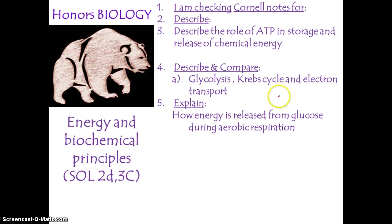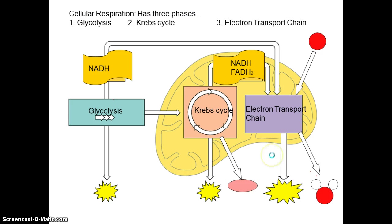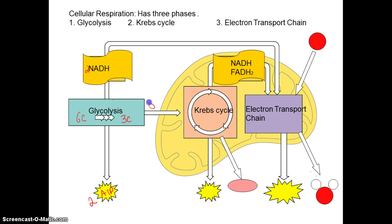Aerobic respiration is when you have oxygen. Remember, there are three processes in cellular respiration. Glycolysis takes that six-carbon glucose and breaks it down to a three-carbon molecule, producing a little bit of ATP — only about two — and two NADH, which will go to the third process, the electron transfer chain. If there is oxygen, it'll go into the mitochondria.